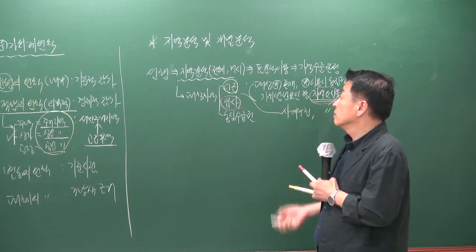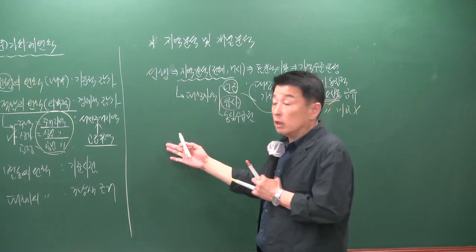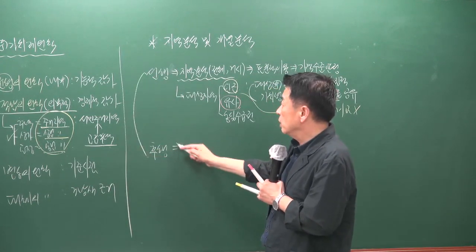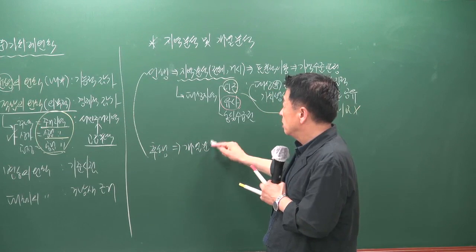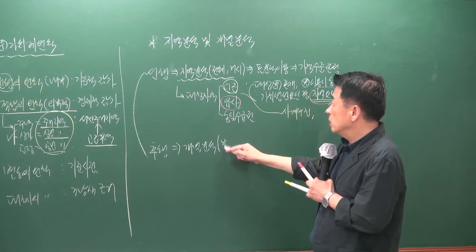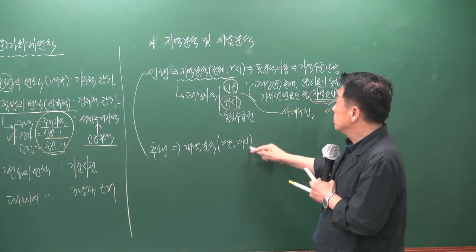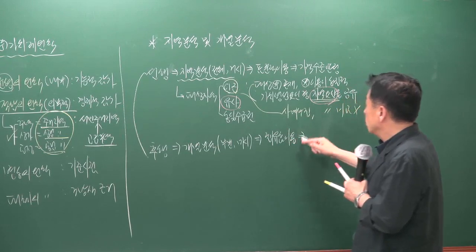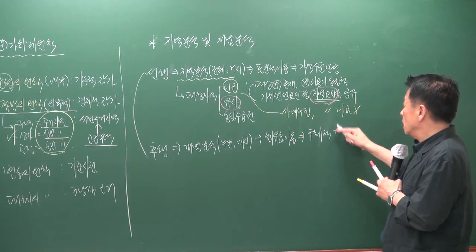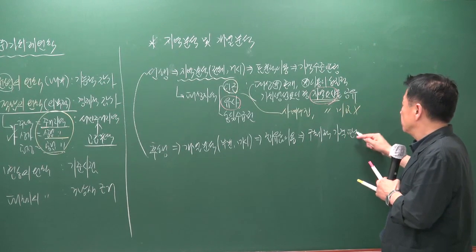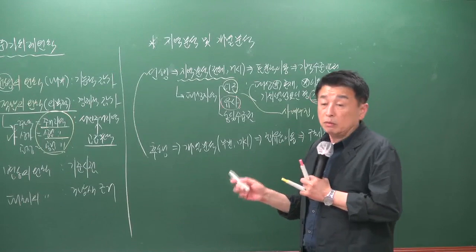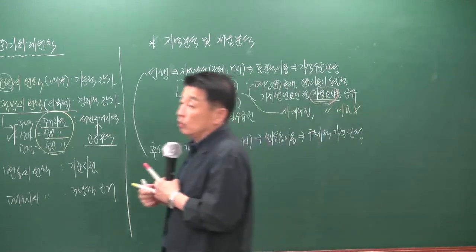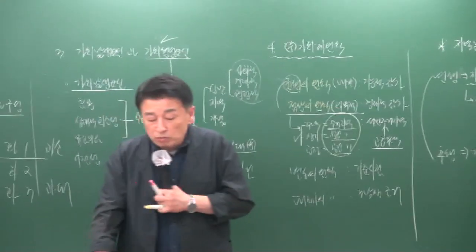개별 분석은 후행 분석으로, 부분적·미시적 분석입니다. 개별부동산의 최유효 이용을 토대로 구체적인 가격을 판정합니다. 지역 분석은 표준적 이용을, 개별 분석은 최유효 이용을 기준으로 한다는 것을 구별하시면 됩니다.